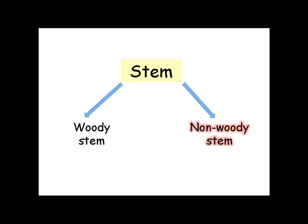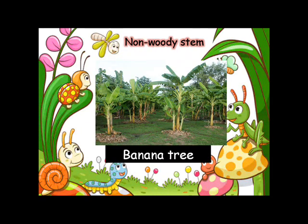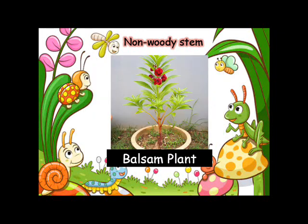Now let's look at the examples of non-woody stem plants: sugar cane plant, banana tree, papaya tree, and balsam plant.